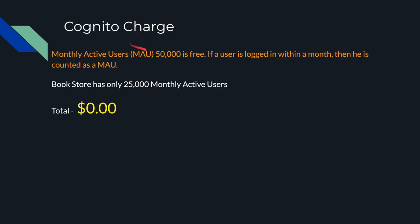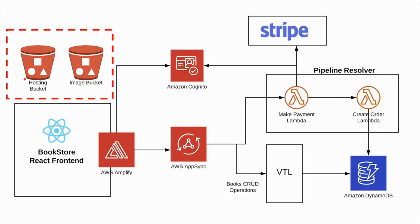Let's move on to Cognito user pool — it's basically free. It provides 50,000 monthly active users at no charge. A user is considered active if they logged into your application within that month. Let's say the bookstore has only 25,000 monthly active users — the price is still zero.